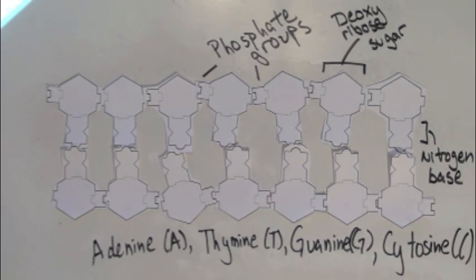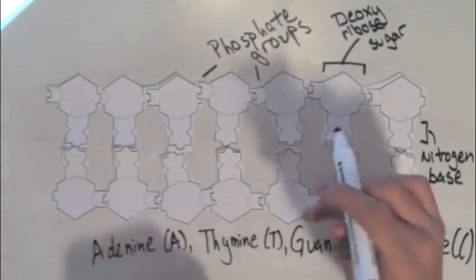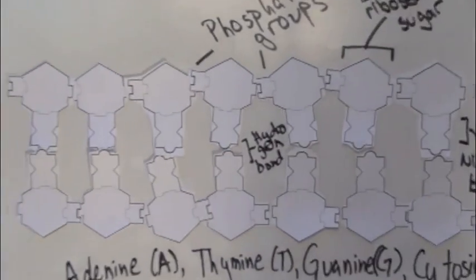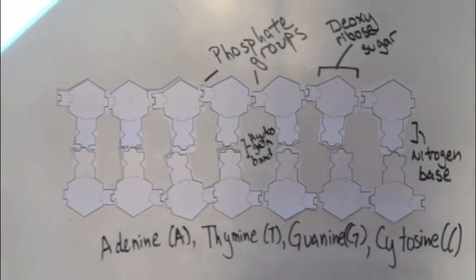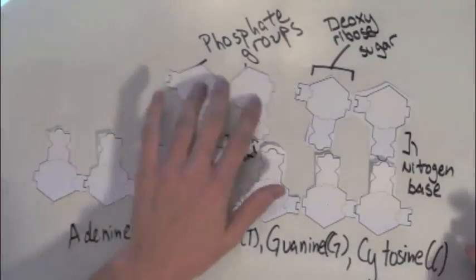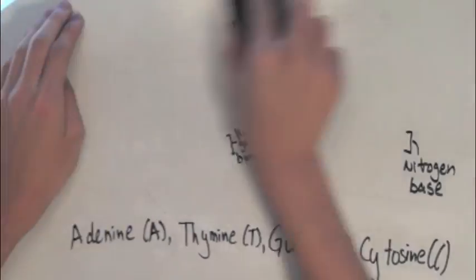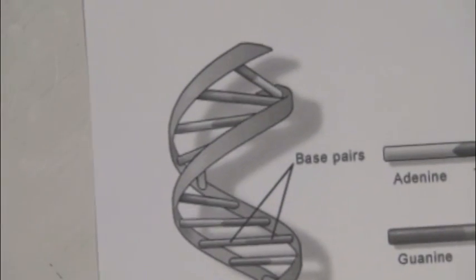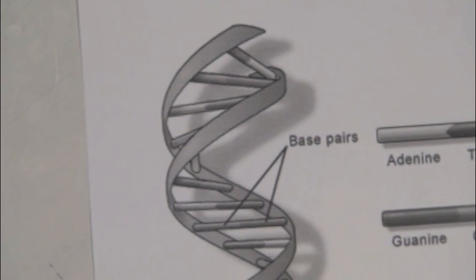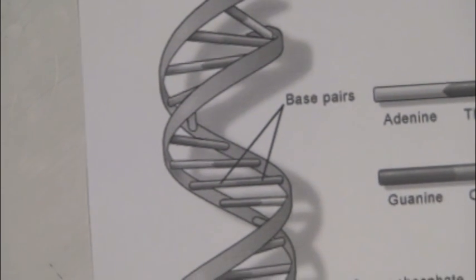The two chains of DNA connect via weak intermolecular hydrogen bonds between a nitrogen base on one chain and a complementary nitrogen base on the other chain. This forms our double chain, which in the secondary structure is twisted into the famous double helix shape, which we all recognize.